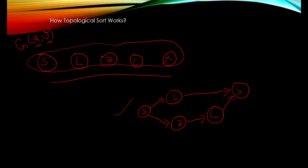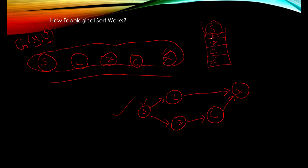The implementation is based on DFS. We start from vertex S, go to an adjacent vertex like L, then Z, and as we reach the end of each DFS path we push that vertex onto a stack. So vertex X goes in first, then C, then Z, then L, and finally S. Popping these from the stack gives us the topological order. This will be very clear in the code.